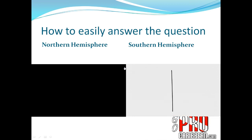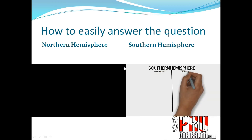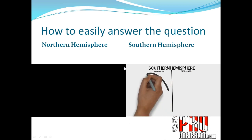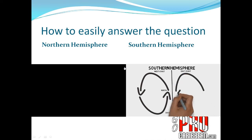If the question is about a southern hemisphere continent — South America, South Africa, whatever it may be — draw the same line with west coast to the left and east coast to the right, then draw circular arrows going counterclockwise because it's the southern hemisphere. That shows you that on the west coast currents run from south towards the north, and on the east coast they run from north towards the south. Too many people answer this question wrong.